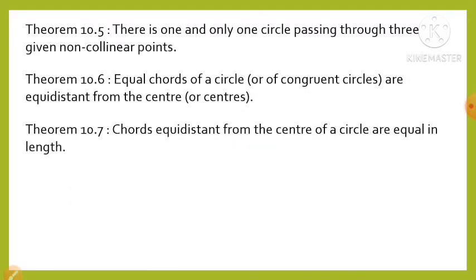Theorem 10.5 tells us that there is one and only one circle passing through three given non-collinear points. Theorem 10.6 states that equal chords of a circle or of congruent circles are equidistant from the center or centers. Theorem 10.7 tells us that chords equidistant from the center of a circle are equal in length. In the next lesson we will learn all the remaining theorems and examples.